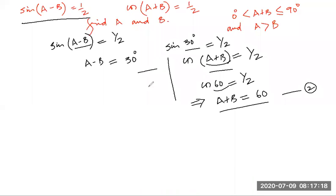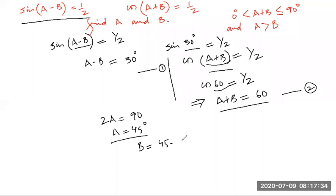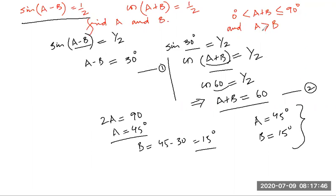Adding both equations: 2A equals 90, so A equals 45 degrees. When A is 45, B equals 45 minus 30 equals 15 degrees. So A is 45 degrees and B is 15 degrees. The condition that A is greater than B is satisfied. A + B equals 60 degrees, which is more than 0 and less than or equal to 90 degrees. Both conditions are satisfied.